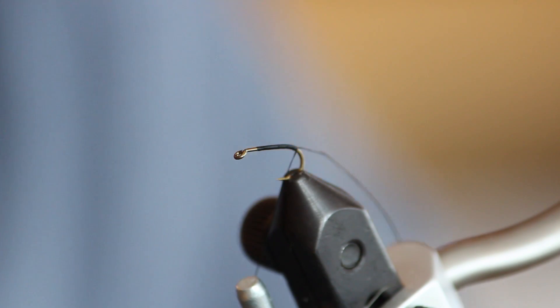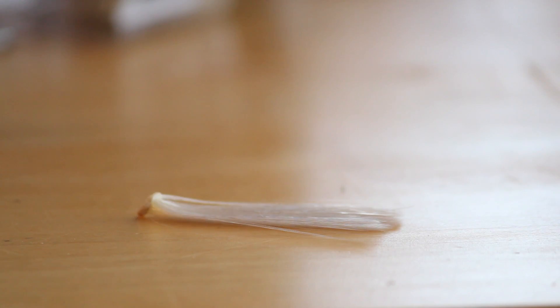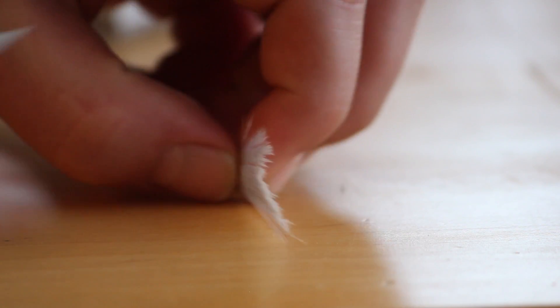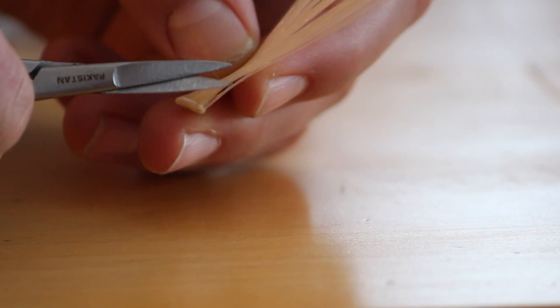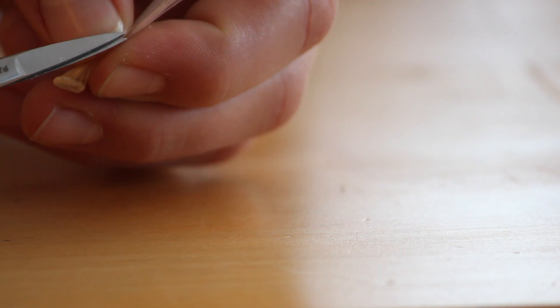Once you have secured your thread, choose 2 or 3 microfibbets. In this video I only used 2 microfibbets and notice how I cut them with my scissors instead of pulling them out with my hands. This ensures straight and strong microfibbets.